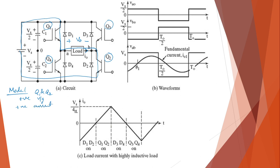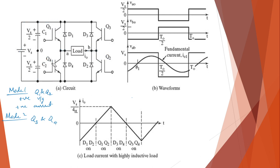For the case of purely resistive loads, you have only two modes of operation. In mode 1 we have already discussed Q1 and Q2; in mode 2 you have Q3 as well as Q4. When you turn on Q3 and Q4, your current starts from the supply, goes through Q3, flows through the load and back to the supply. The direction of the current is in the reverse direction compared to your reference, so you get negative voltage as well as negative current.